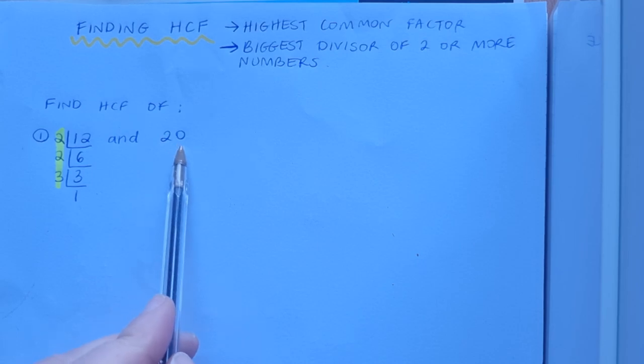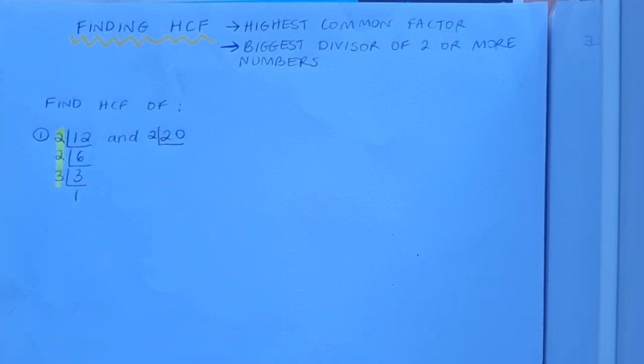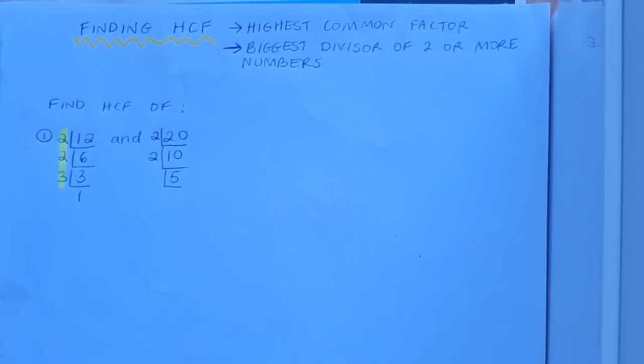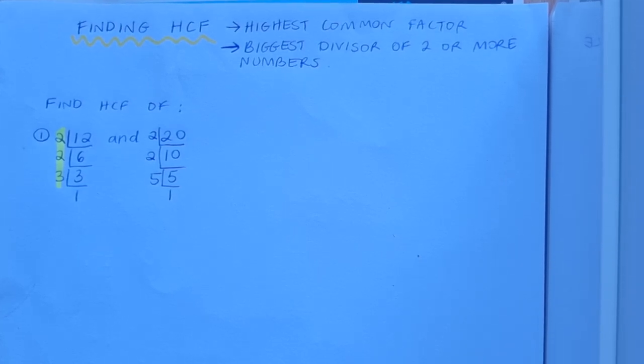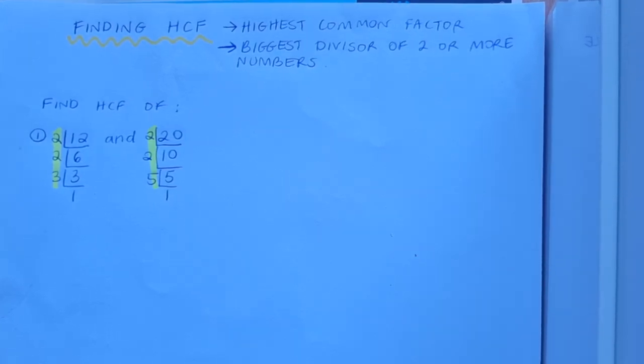Now I go on and look at 20 and do the same thing. Well 2 will go into 20 and 2 will go into 10 and 5 will go into 5 and I get to 1 I'm done. There's my prime factors of 20.